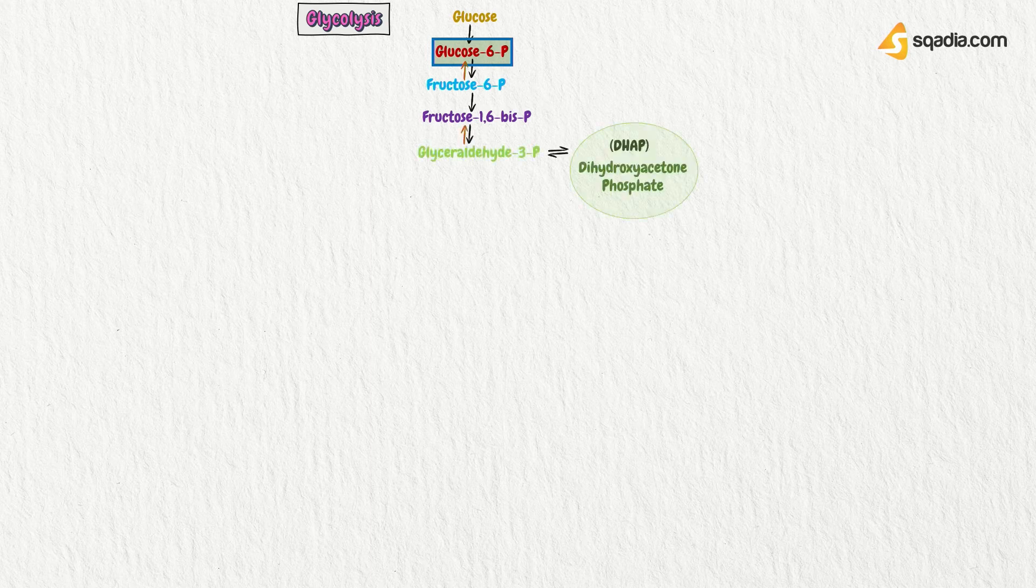Glycolysis is a 10-step process in which glucose is converted into pyruvate molecule. There is generation of 2-ATP in this process. Now, glucose converts itself into glucose-6-phosphate and from there it converts into fructose-6-phosphate. Fructose-6-phosphate gives rise to fructose-1,6-bisphosphate. And that makes two compounds that are glyceraldehyde and dihydroxyacetone phosphate.